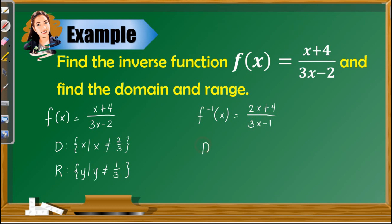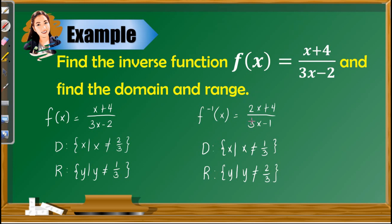To find the domain and range of the inverse, we simply interchange those of the original function. The range becomes the domain: x ≠ 1/3. To check, set the denominator 3x − 1 = 0, which gives x = 1/3. For the range, copy the domain but change it to y: y ≠ 2/3. To verify, since the degrees are equal, take the ratio of leading coefficients, which gives 2/3. So the domain is x ≠ 1/3 and the range is y ≠ 2/3.